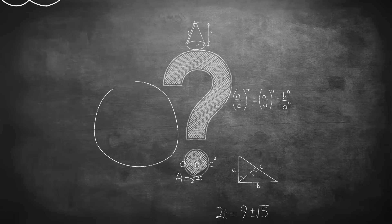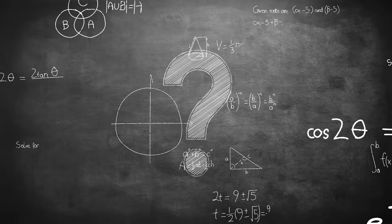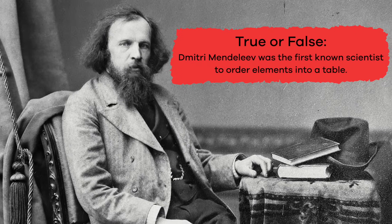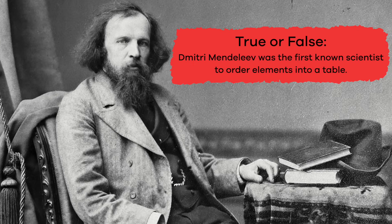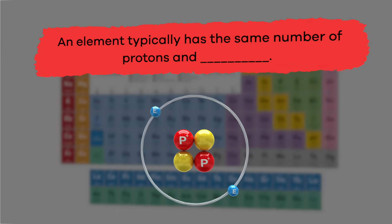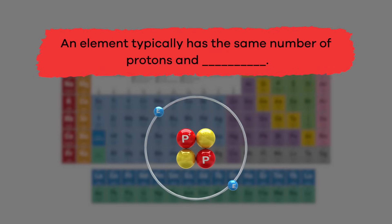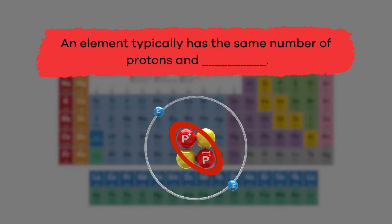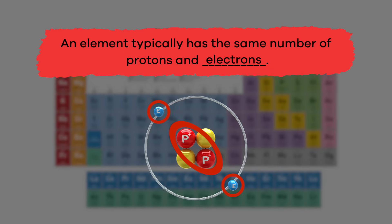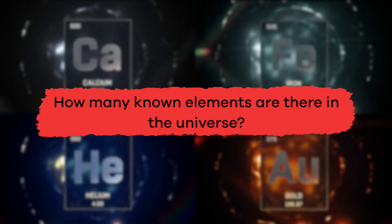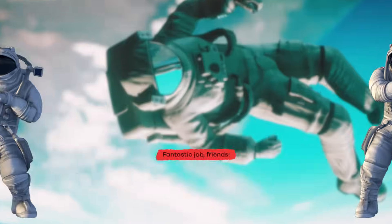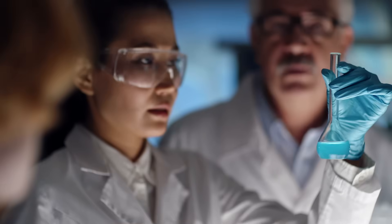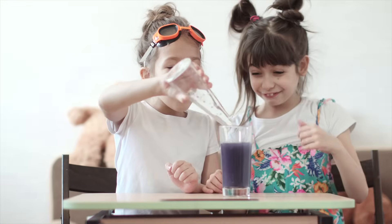Wow, we just learned a lot of new things! It is definitely time to review. True or false: Dmitry Mendeleev was the first known scientist to order elements into a table. True! Fill in the blank: an element typically has the same number of protons and blank. Electrons! How many known elements are there in the universe? I bet you said 118 — fantastic job, friends!